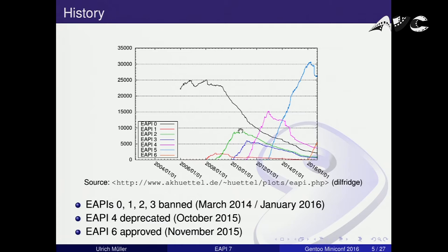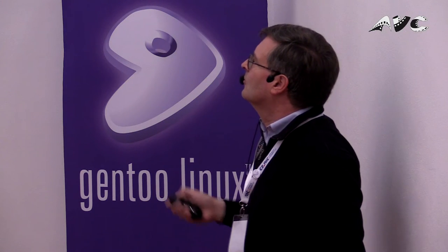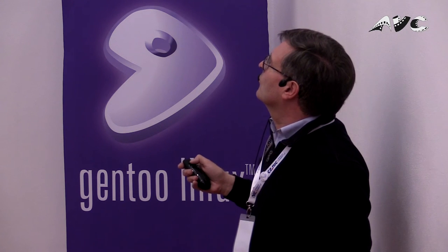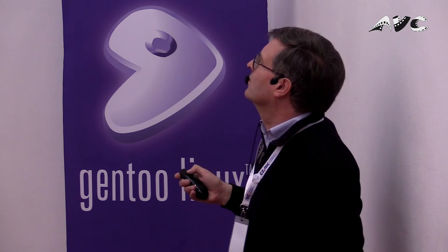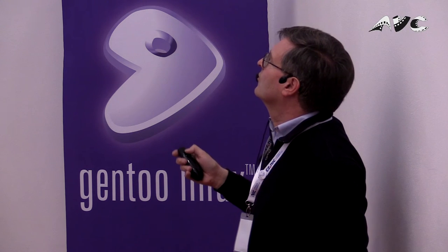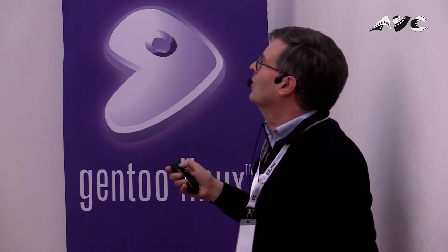Looking at the history — this is one of those plots by Dilfrid — the concept was introduced sometime in 2007–2008, and these are the curves for the different eAPIs. Meanwhile, eAPI 1, 2, and 3 are banned from the tree, so those are all decreasing. eAPI 4 has been deprecated about one year ago, and this red curve is eAPI 6, which was approved almost one year ago. eAPI 5 is still by far the largest, and eAPI 6 is continuously rising.